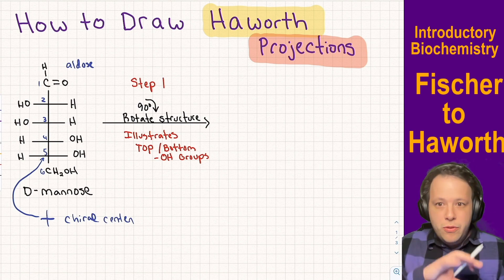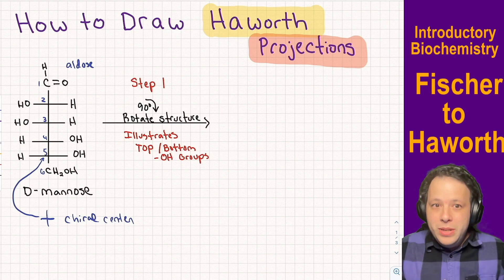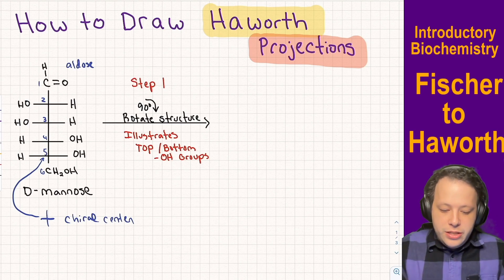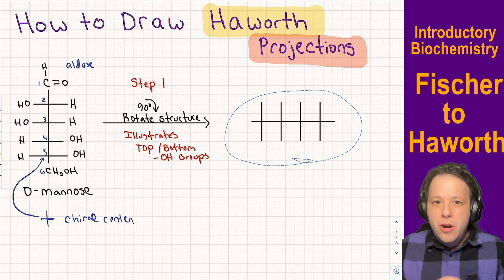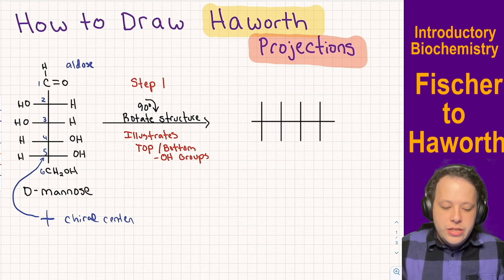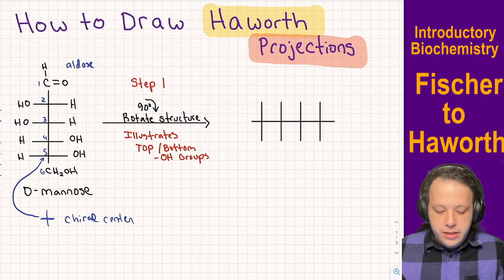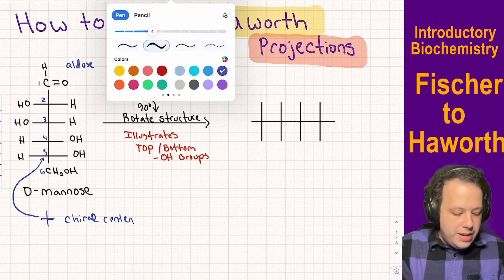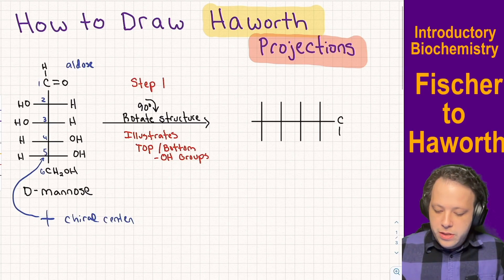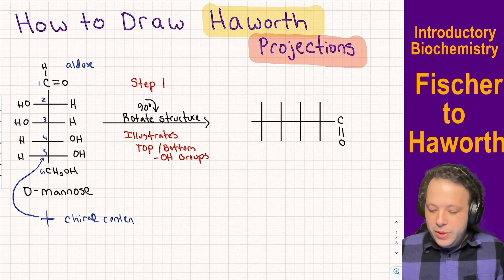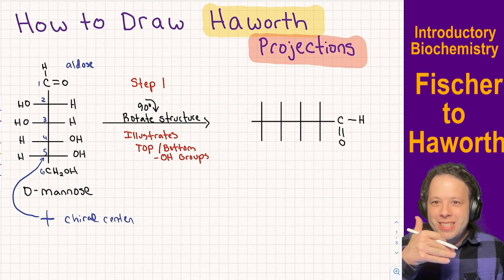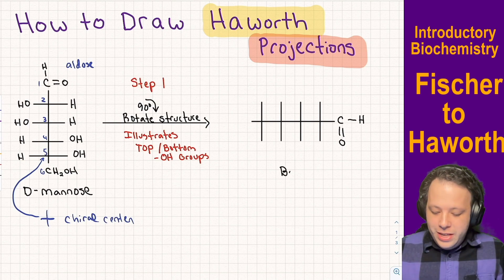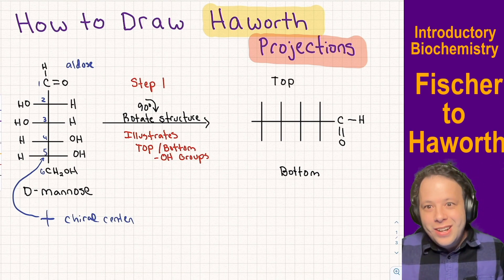The first step is that you need to rotate your structure. When we rotate it clockwise 90 degrees, it helps us see where all the different OHs and CHs are going to be oriented. I like to point the C double-bonded O downward because it helps remind us that all OHs pointing down are going to be the bottom of our ring structure, and everything else is going to be the top.